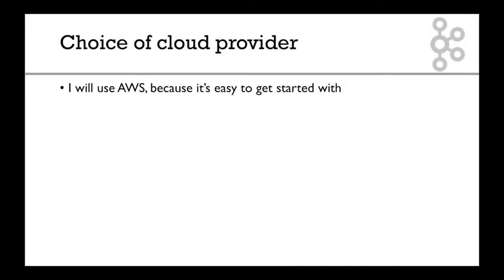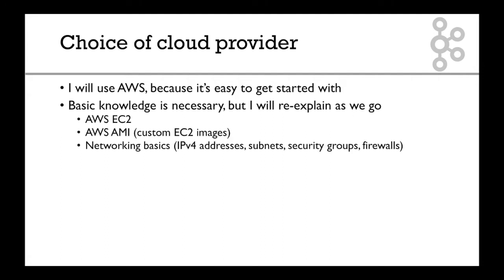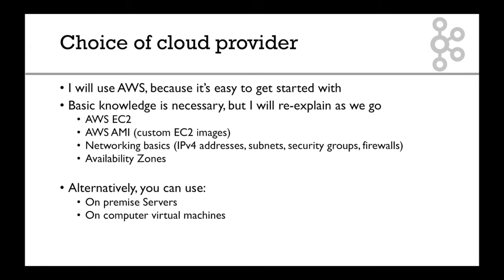We have to choose a cloud provider, and I will use AWS because it's super easy to get started with. Basic knowledge of cloud is necessary, but I will re-explain everything as we go. So that includes AWS EC2, AWS AMI for custom EC2 images, some networking basics like IPv4 addresses, subnets, security groups and firewalls, and some availability zones understanding. Alternatively, you can use on-premise servers, on-computer virtual machines, or any cloud provider such as Azure, Google Cloud, Rackspace, etc. But for this course, I will use AWS.